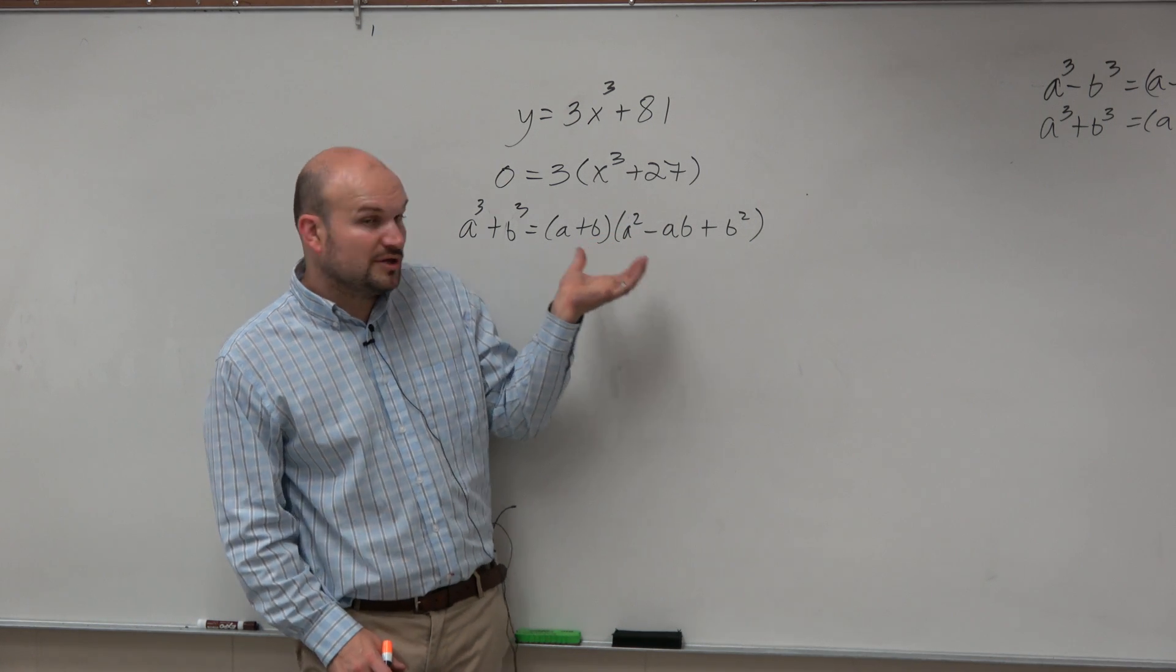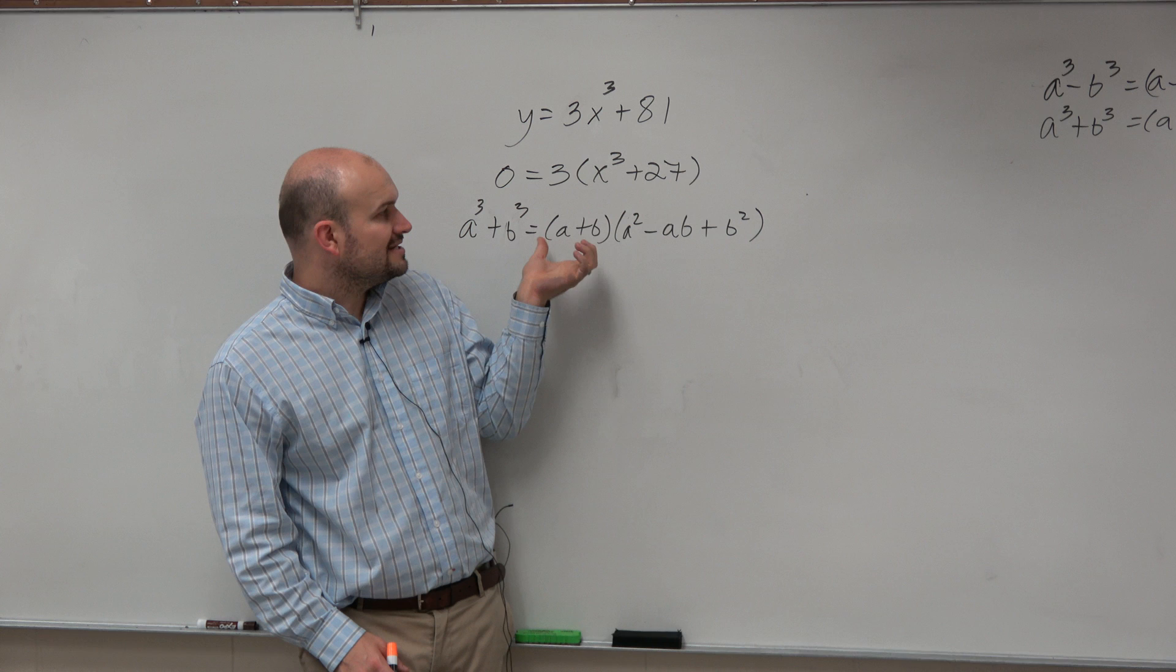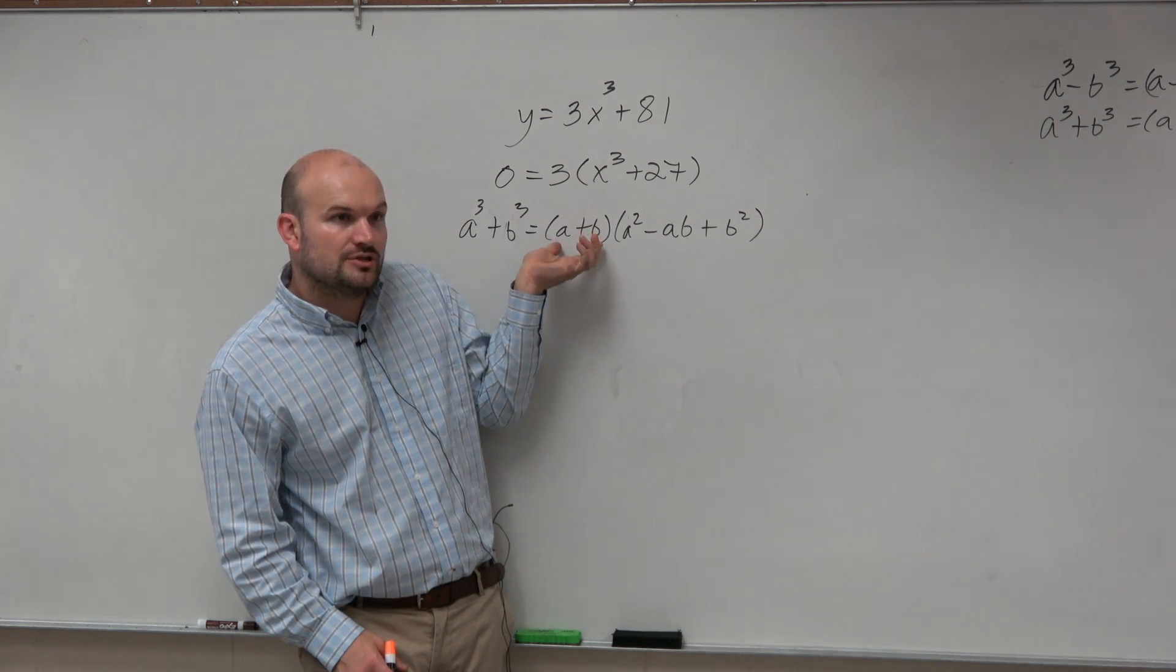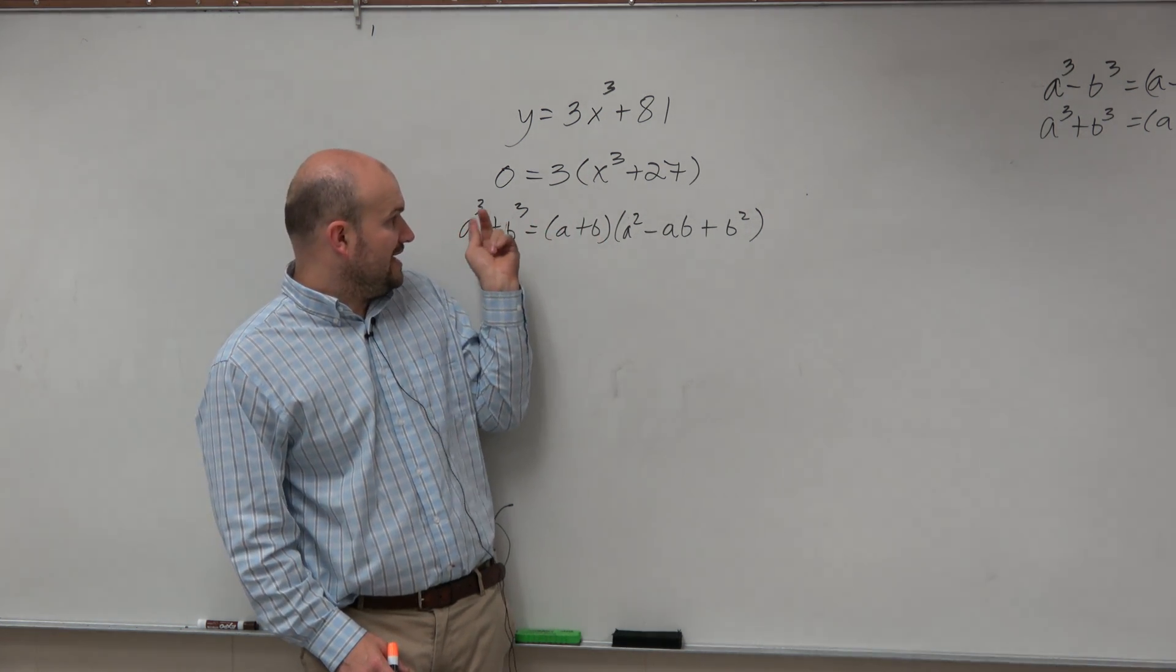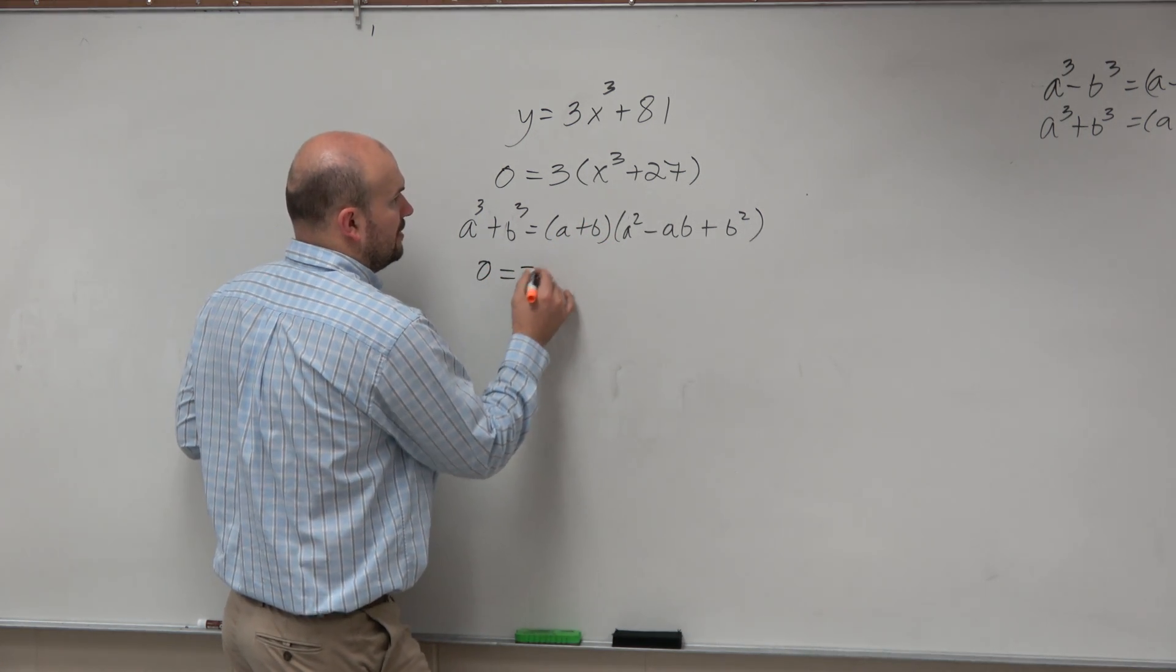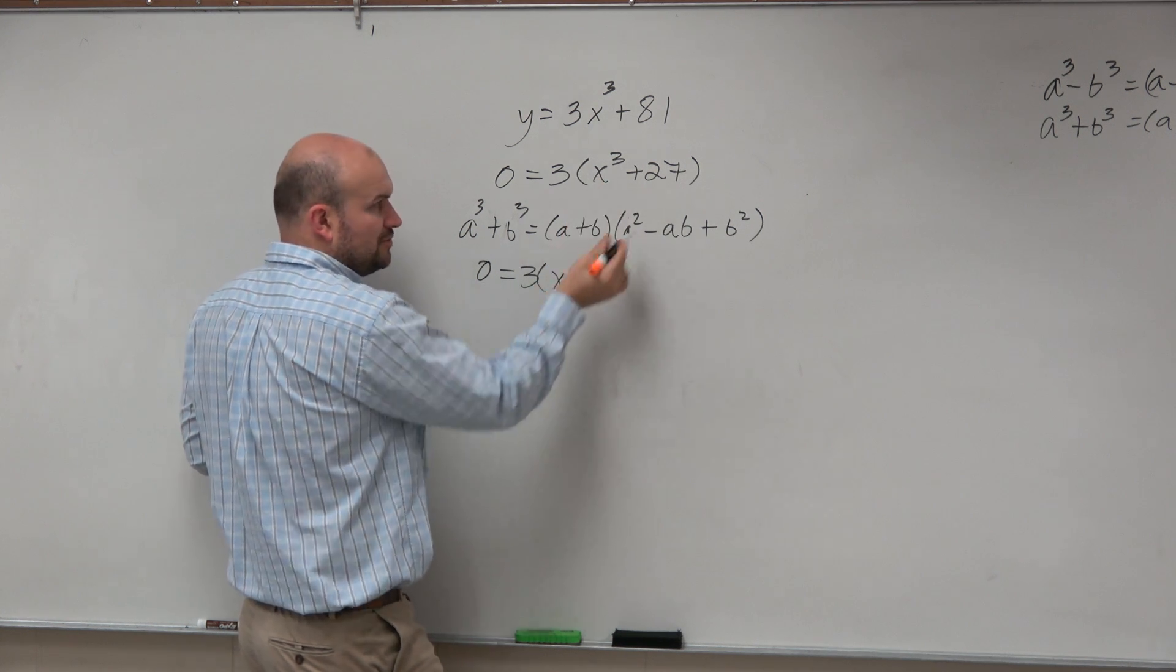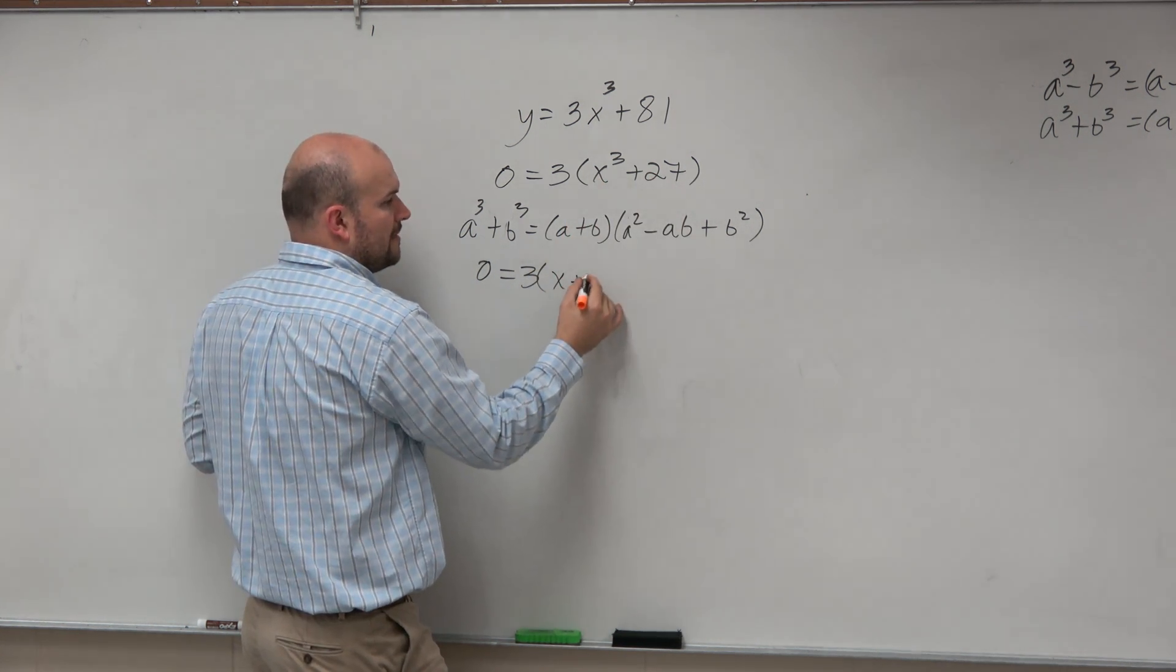So when we're looking at this, if we have the sum of two cubes, what I need is the cube root of those two terms. So a cubed, b cubed, I need to figure out what a and b is. So if I'm looking at this example, what's the cube root of x cubed? x. What's the cube root of 27? 3.